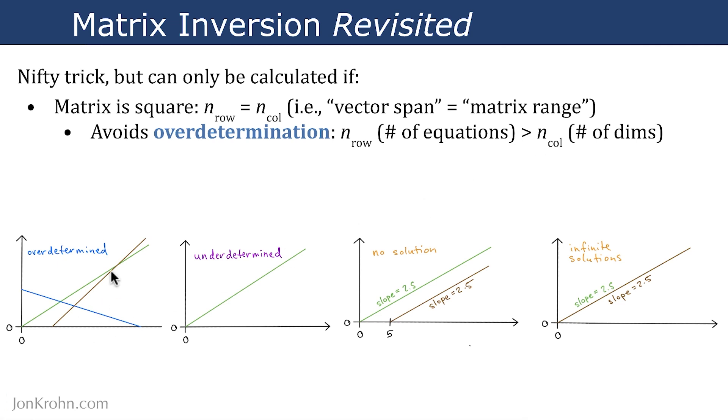We can't solve for a single point where the lines intersect because there are multiple points. So, this is an overdetermined system. In contrast, an underdetermined system is one where there are fewer equations than there are dimensions. Here's an example where we have a matrix with one row representing one line equation and two columns representing the x and y dimensions.